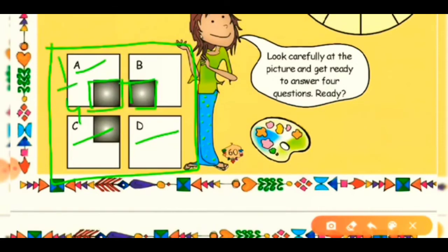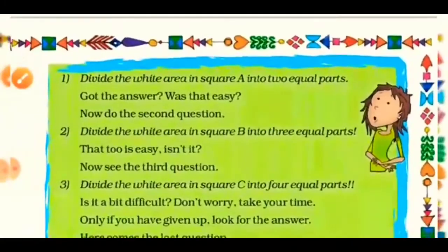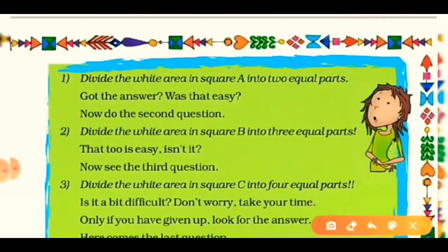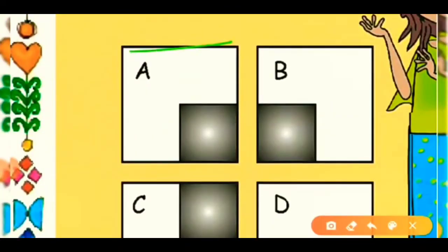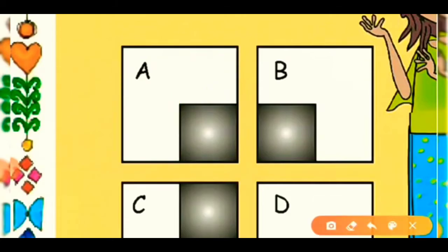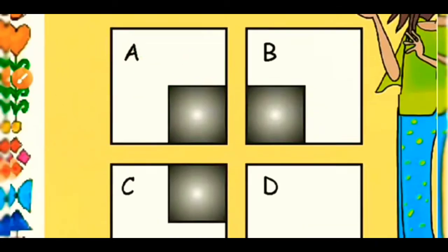In square A, the colored part is 1/4. In square B, the colored part is also 1/4. In square C, the colored part is also 1/4 and three-fourths are not colored. Square D is blank. The first question asks: divide the white area in square A into two equal parts. Just draw a straight line from one point to match the other line, and the whole white part is divided into 1/2 parts. Very easy!